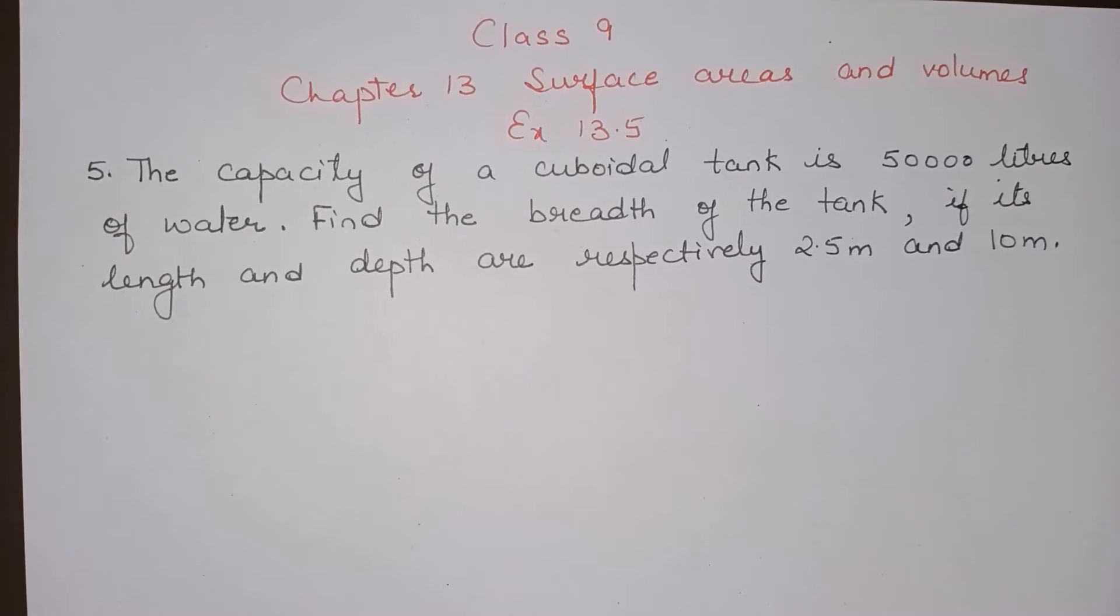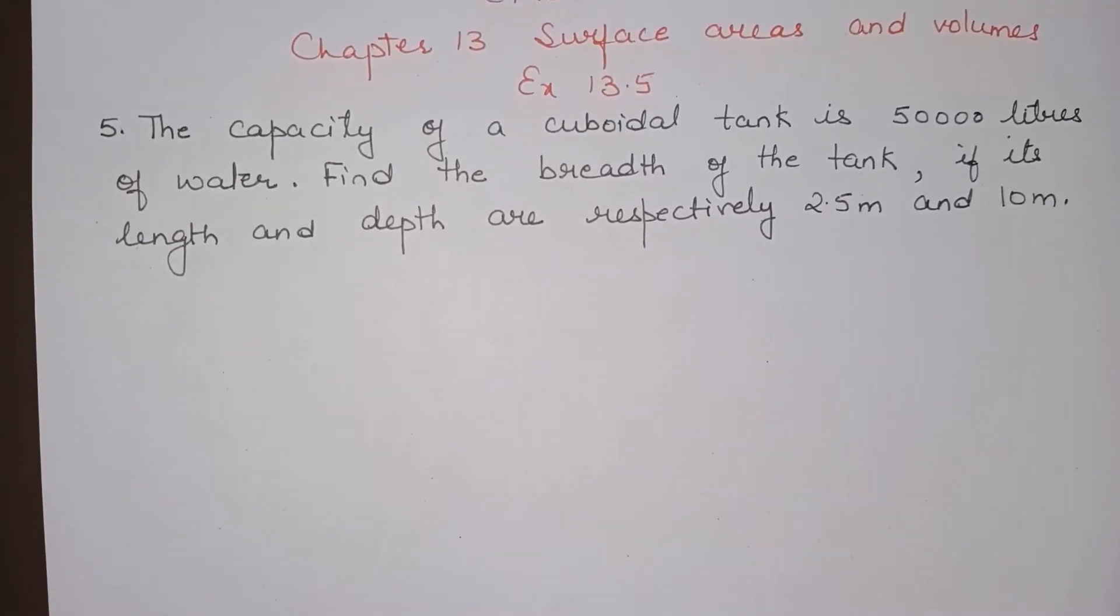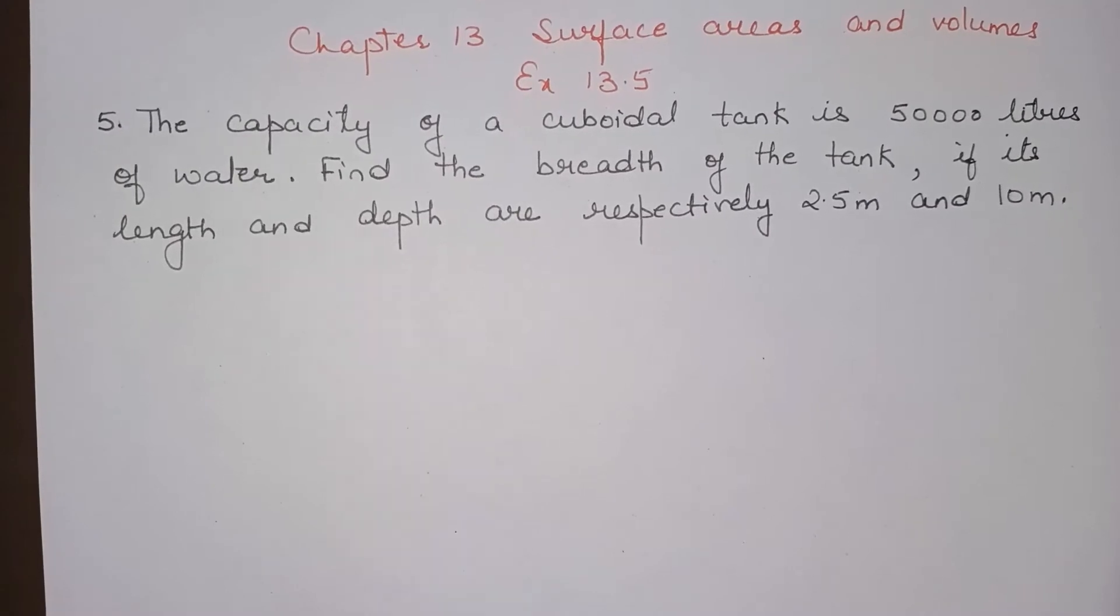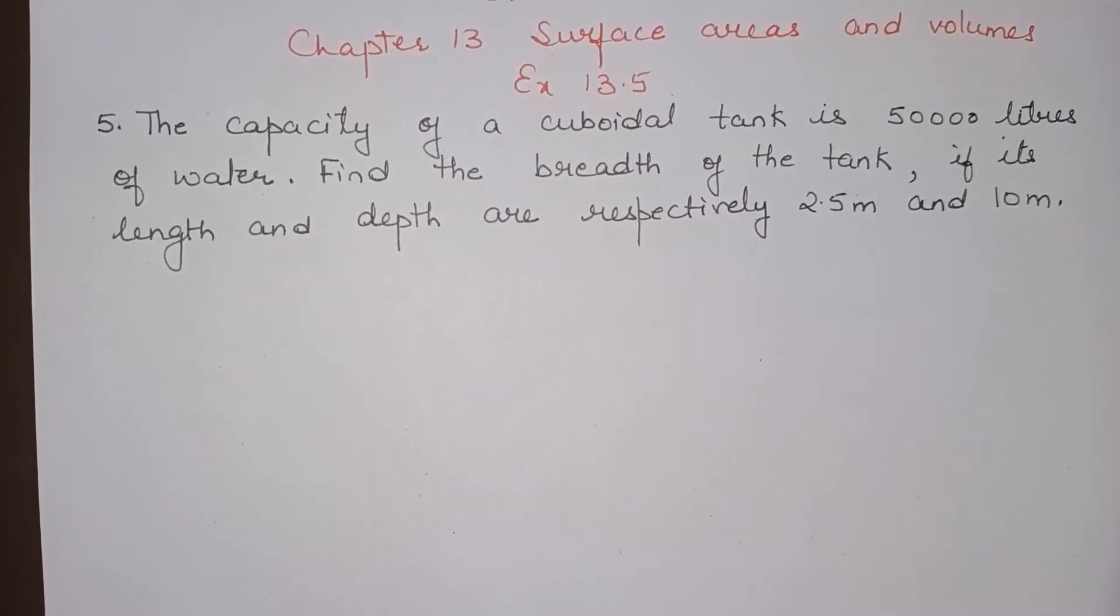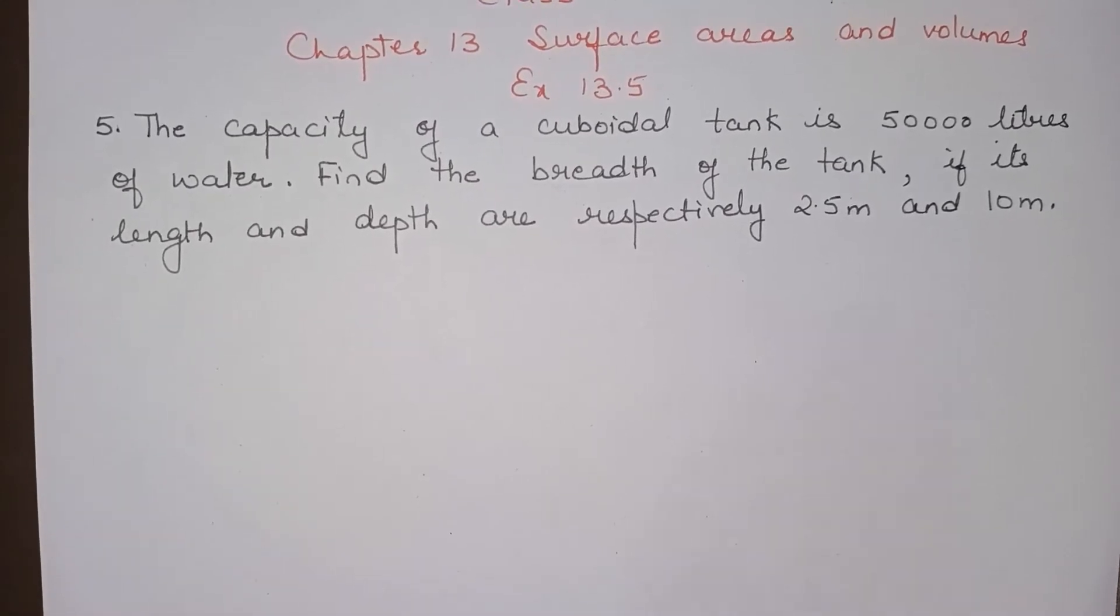The capacity of a cuboidal tank is 50,000 litres of water. Find the breadth of the tank if its length and depth are respectively 2.5 metres and 10 metres.